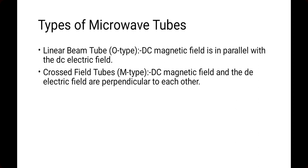So basically, there are two types of microwave tubes. First is the linear beam tube, which is also called the O-type tube. Second is cross-field tubes, which are also called M-type microwave tubes. In linear beam tubes, the DC magnetic field is parallel to the DC electric field, whereas in cross-field tubes, both are perpendicular to each other.